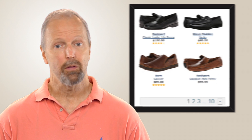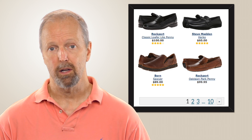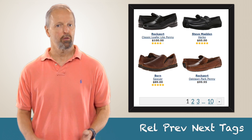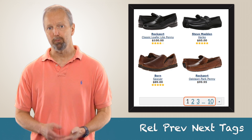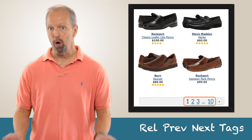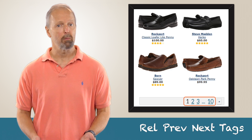Hey everyone. Today I'm going to explain how to implement rel-prev/next tags. They're the ones that tell Google about a paginated sequence of pages on your site. For example, if you have a hundred products in one category and you want to show only ten per page, you end up having to create ten pages of products to show them all. This is really quite common on e-commerce sites.